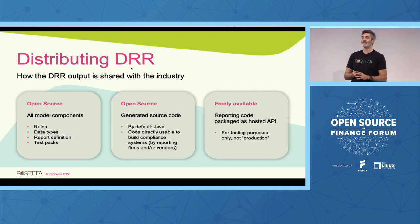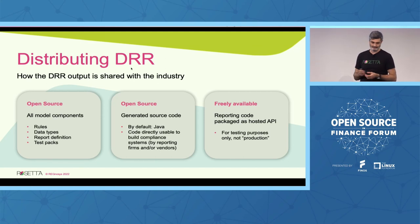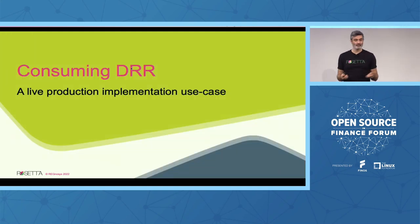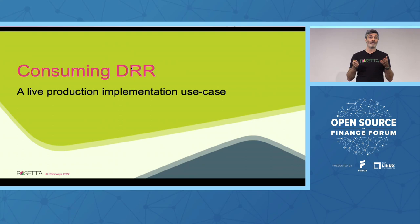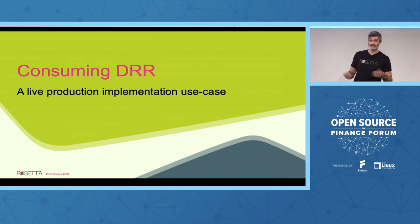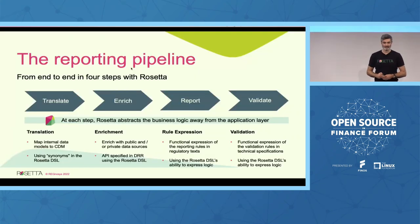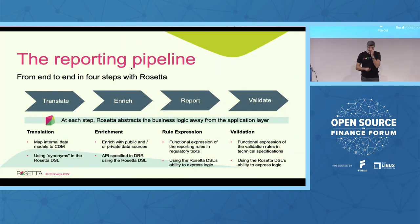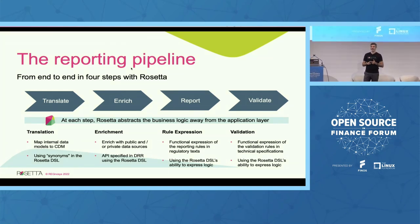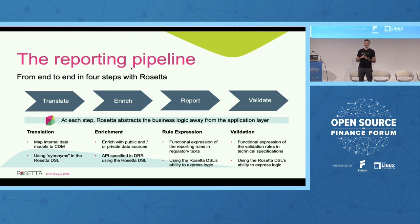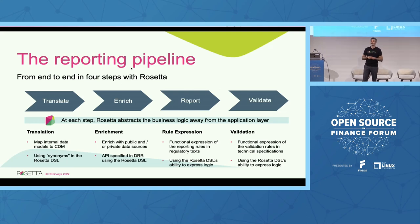Many in the room are also consumers of DRR — how can they make use of this great asset built in open source? We have an example of a live production implementation use case that went live on the 5th of December — Monday this week — and it went live smoothly, which may be a first for a regulatory project. This is how firms consume DRR: you need to get end-to-end in four steps — translate, enrich, report, and validate. At each step, Rosetta allows you to abstract the business logic away from the application layer.